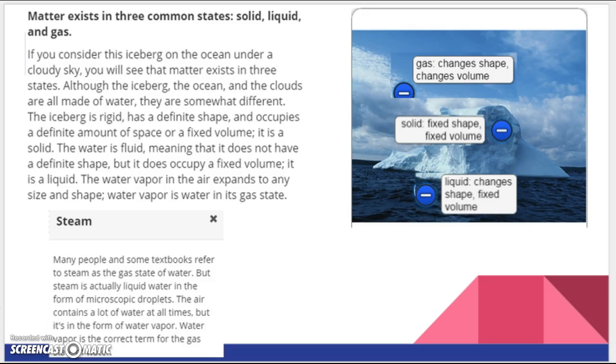We left off talking about solids, and now we are going to move on to talk about liquids. So the liquid, in this case, is the ocean water. The water is fluid, meaning that it does not have a definite shape, but it does occupy a fixed volume, and therefore it is a liquid.